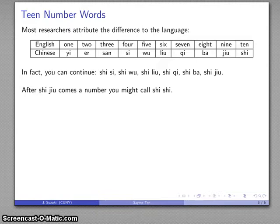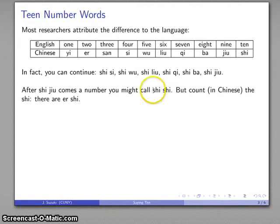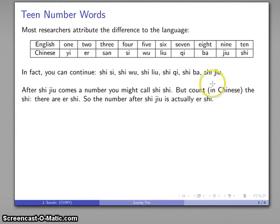And after we get to a number we might call shi shi, but let's try to be systematic about this. If I were to actually count in Chinese the number shi here, I would count yi shi, er shi. And this is in fact the name of the number after 10-9. It's actually called er shi, two tens.